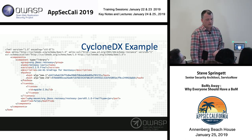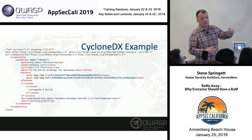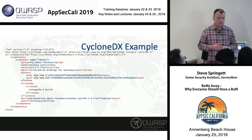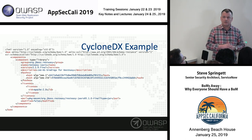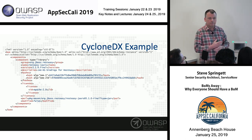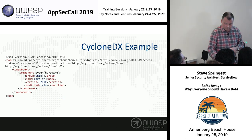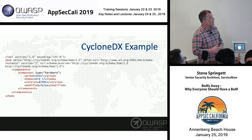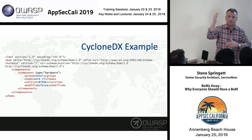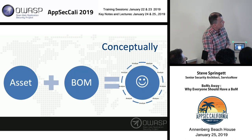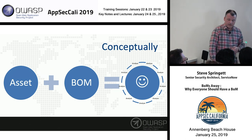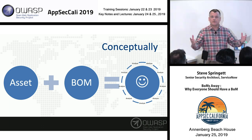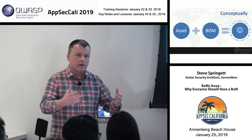Here's an example BOM of that same component using CycloneDX. It's pretty self-explanatory: you have group, name, version, file hashes, license, and the Package URL of the component. There's also a hardware representation, so you can have a single BOM that actually includes both software and hardware components. Conceptually, this is what we're trying to do — all this analysis for software transparency via Bill of Materials.